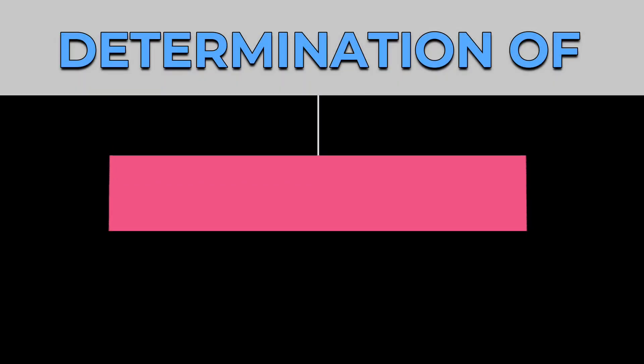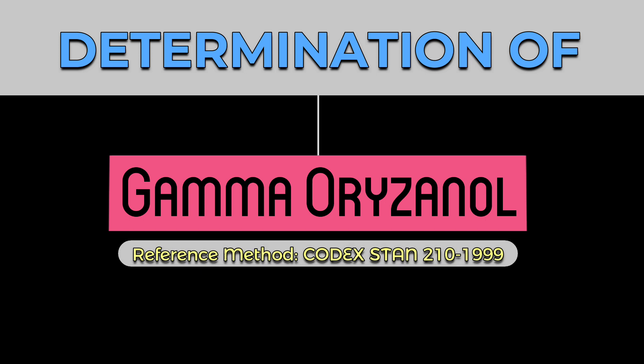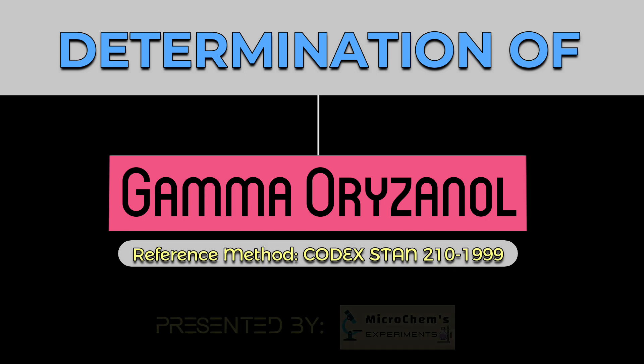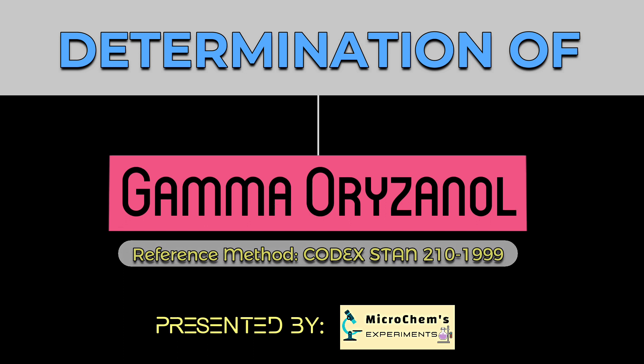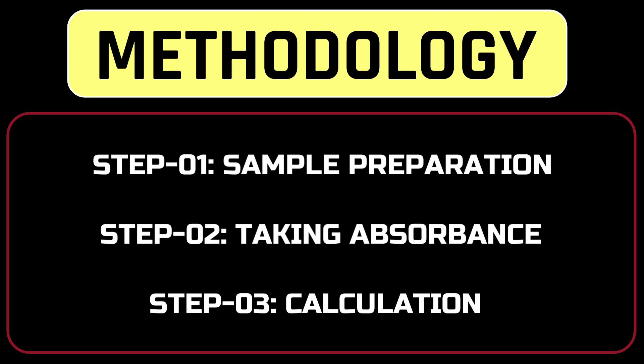Dear viewers, today we are going to do a very important test for oil sample which is the determination of gamma oryzanol. Welcome to Micro Games Experiments. This method contains three steps: sample preparation, taking absorbance, and calculation.